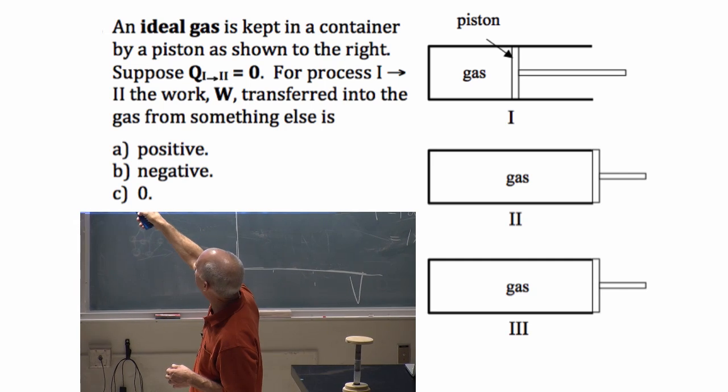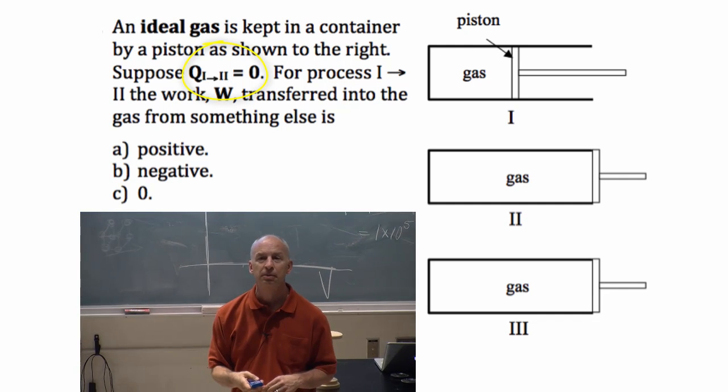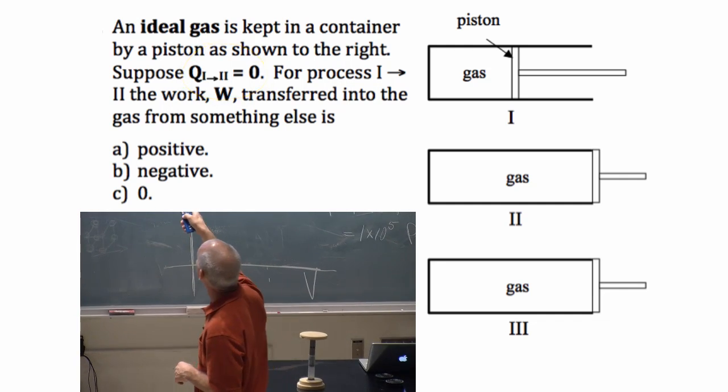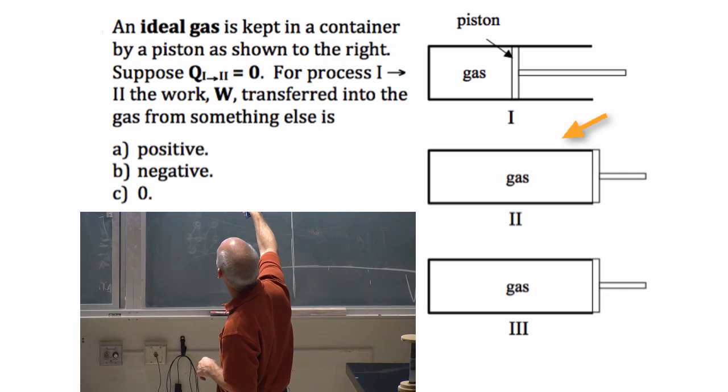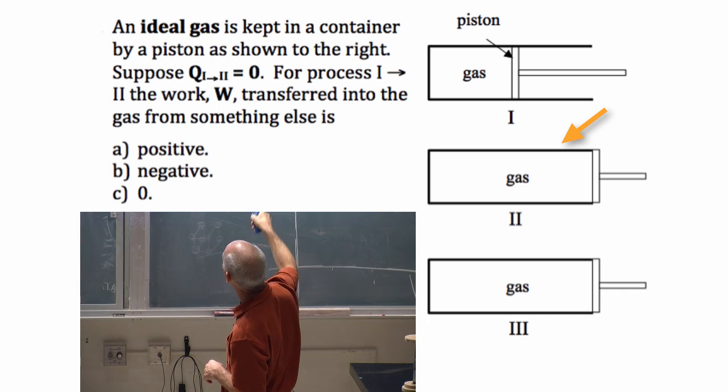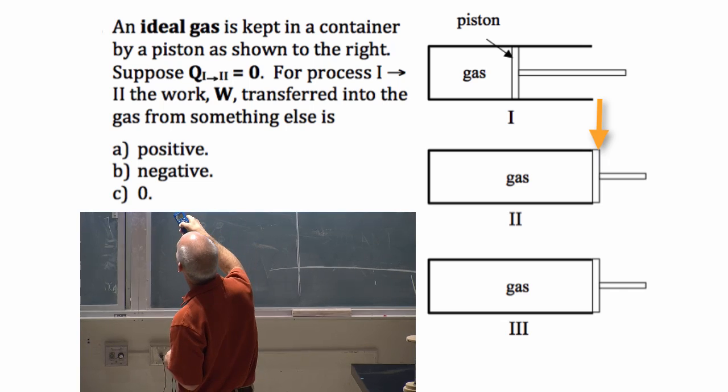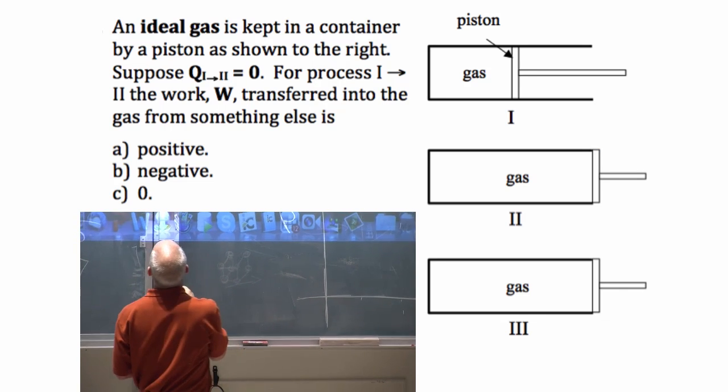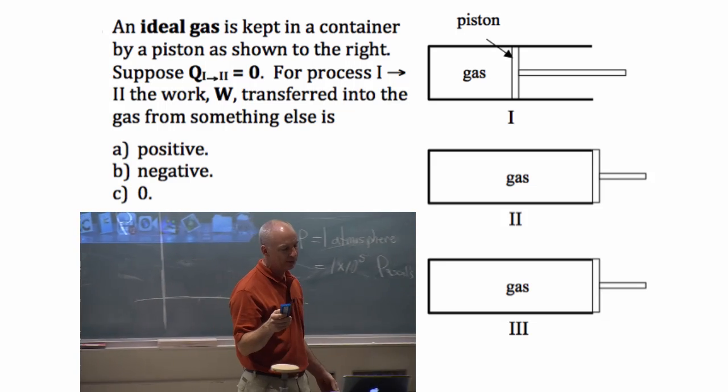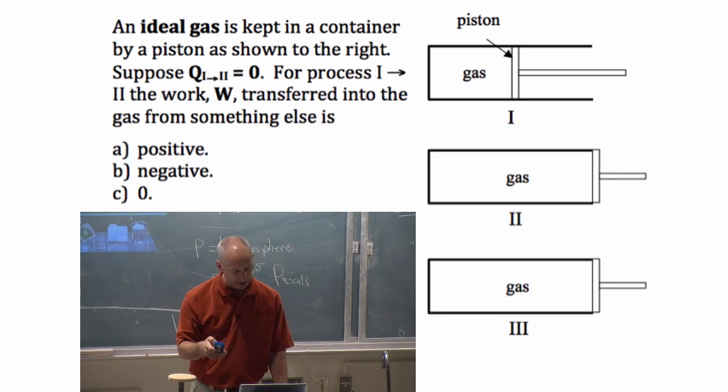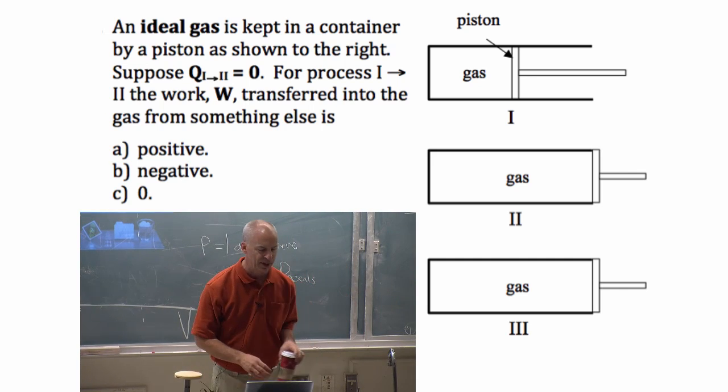What I'm going to tell you about process one to two is that no heat was transferred between process one and two. This is the picture at the beginning, this is the picture at the end. The piston's obviously come back to here, about twice the volume. For process one to two, the work W transferred into the gas from something else is: a) positive, b) negative, c) zero. Give you about a minute.